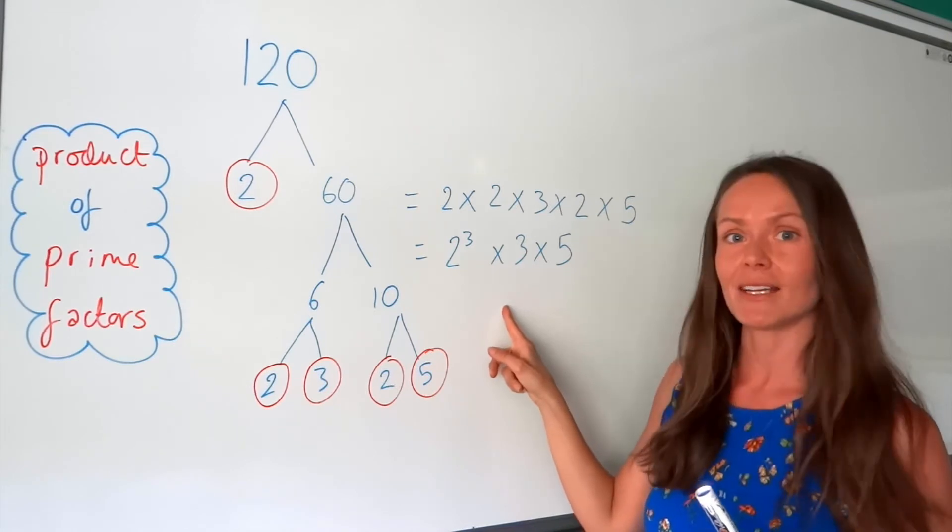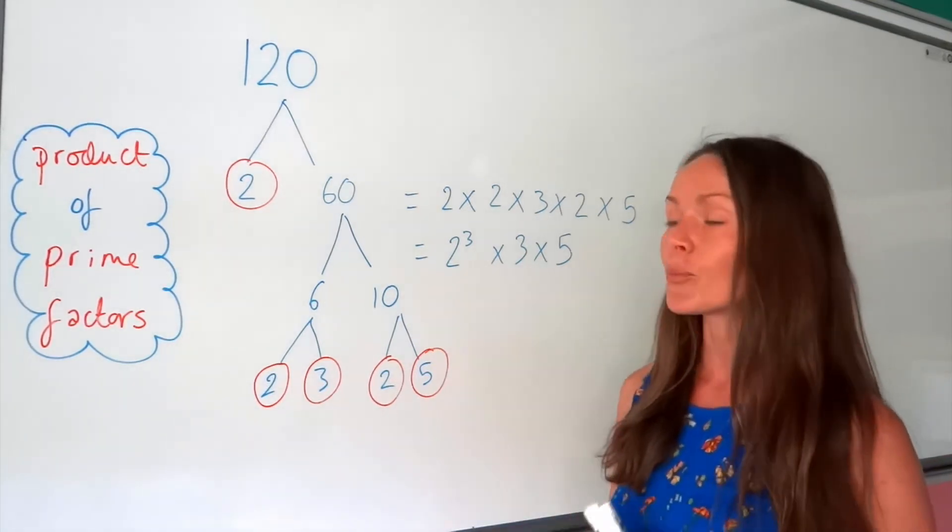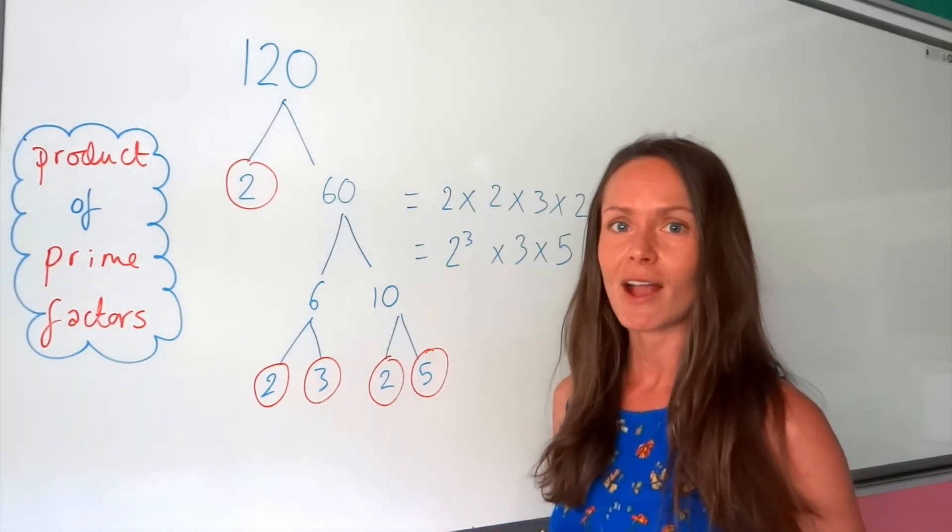Okay, so I know I've done that correctly. So there's my first example on writing a number as a product of its prime factors. I'll do another one now, just so you've really got the hang of it.